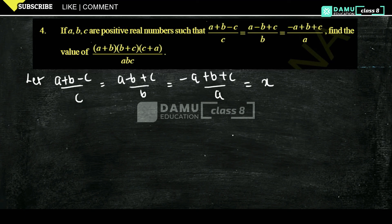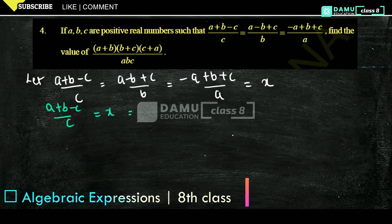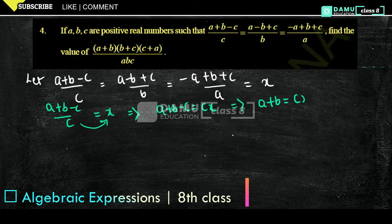Let's take the first expression: (a plus b minus c) divided by c equals x. This implies a plus b minus c equals cx, so a plus b equals cx plus c, and taking c as common, a plus b equals c times (x plus 1).